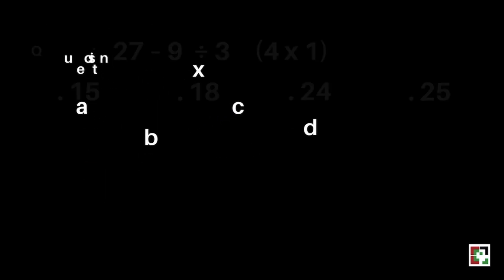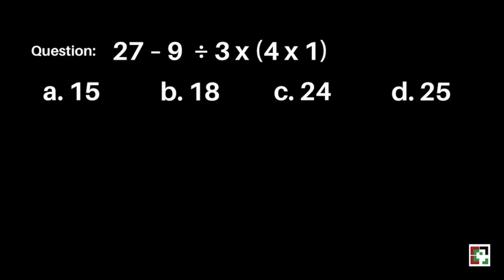Let us have some examples. Question number one: 27 minus 9 divided by 3 times the quantity of 4 times 1. The choices are A) 15, B) 18, C) 24, D) 25. Which do you think is the answer? We cannot answer this when we don't know PEMDAS or BODMAS, so we'll follow the rule we just discussed.